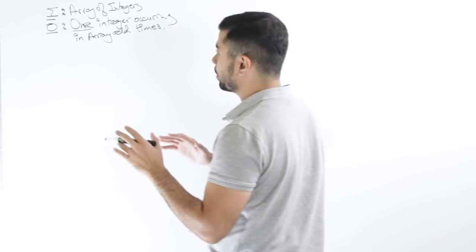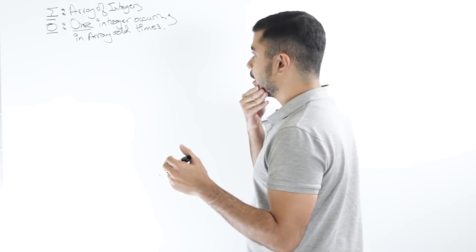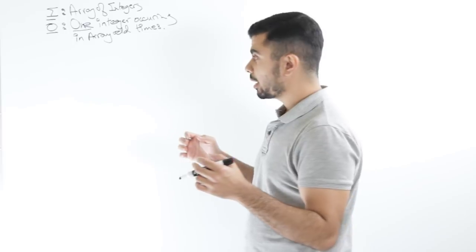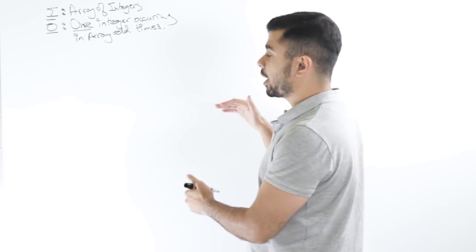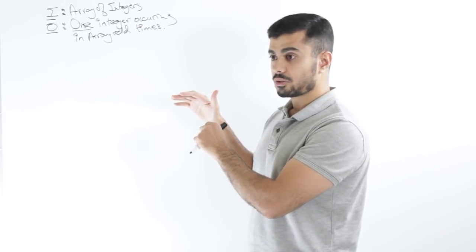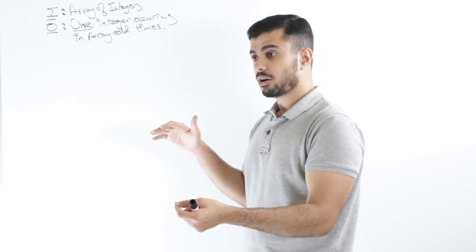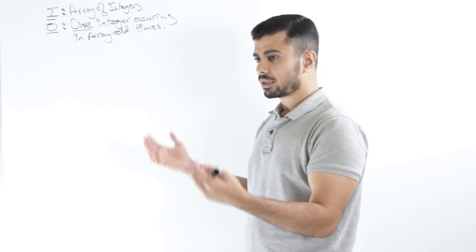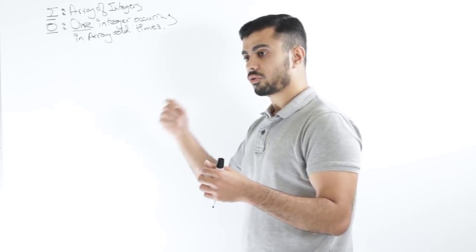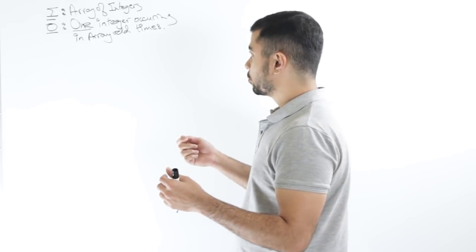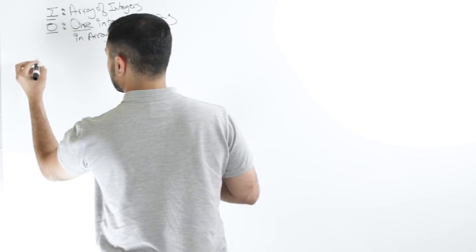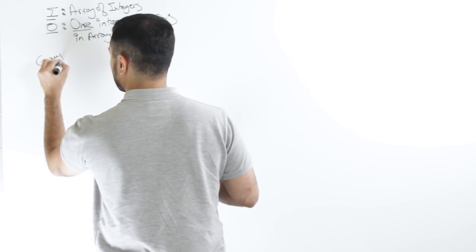So there are multiple ways to approach this problem. The first one that comes to mind is to iterate through the array and in some way have a log of each of the elements in the array to see how many times I've already iterated on that element. So it can be like a hash map or an object, and I can increment the counter every time I encounter that element again.